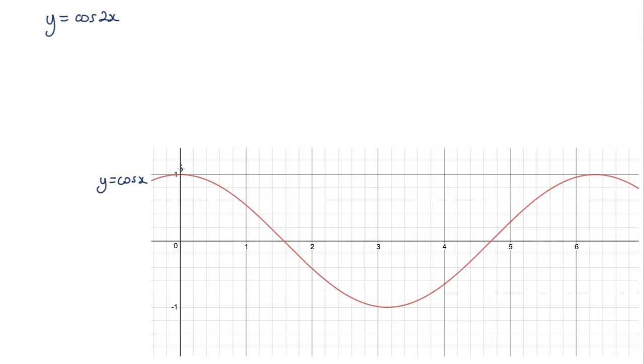If I look at this point here, I can see that the tangent, the gradient of that tangent is 0. So I'm just going to plot that point. Let's look at this point here. I can see the tangent, the gradient of that tangent is going to be negative, it's negative 1. So I'll plot that point.